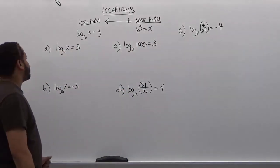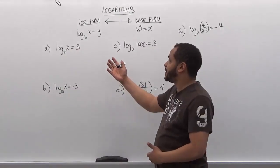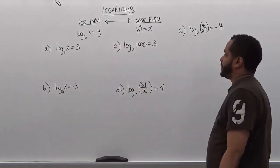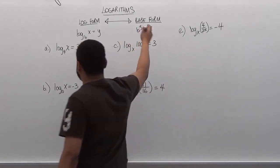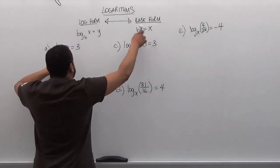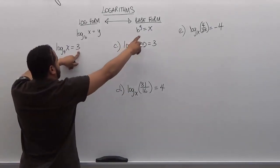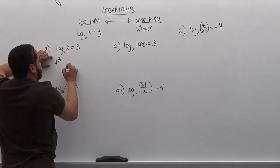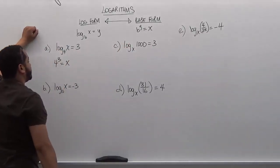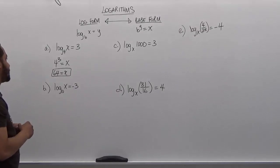Here we have a series of five problems. The first problem has log base 4 of x is equivalent to 3, and we're trying to solve for x, the term of the logarithm. To do this we transform the log form to base form. We take the base of 4 and make it the base of the expression. The 3 becomes the exponent, and x becomes the solution. Now 4 to the third power is 64, and that's our solution: x = 64.